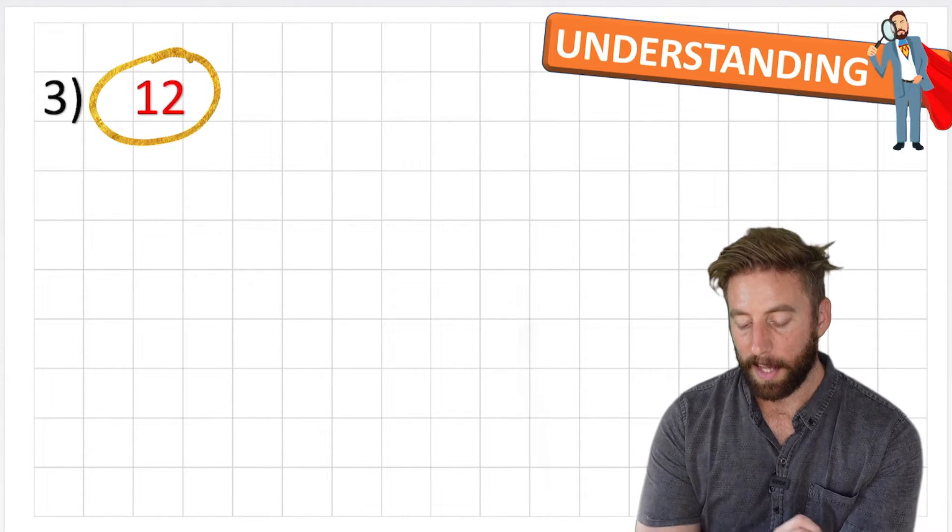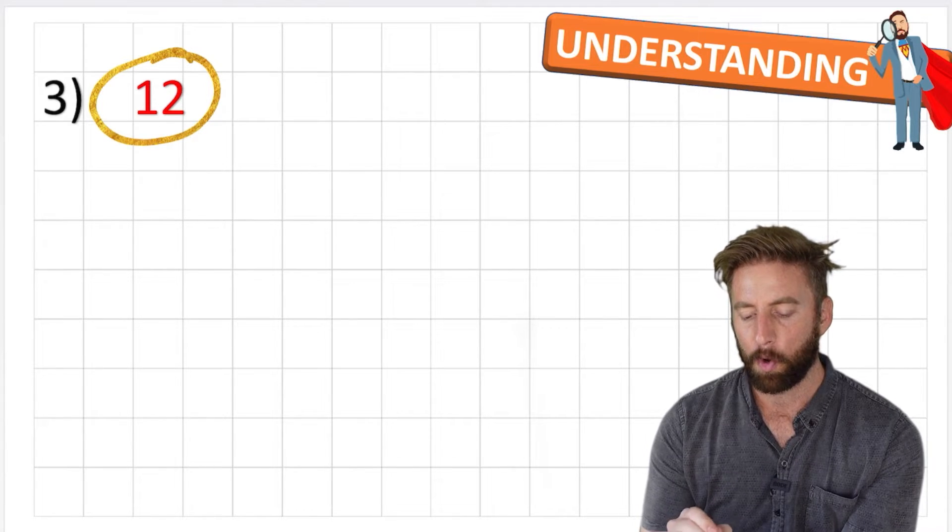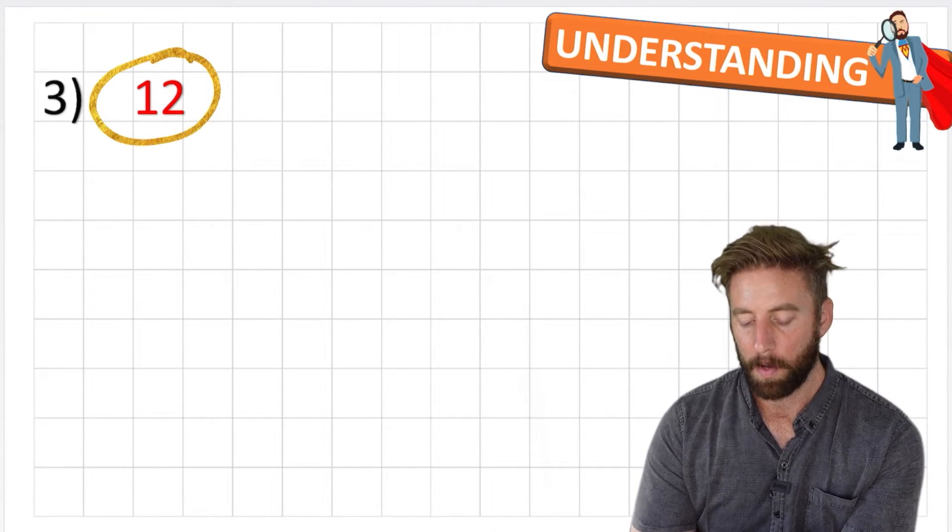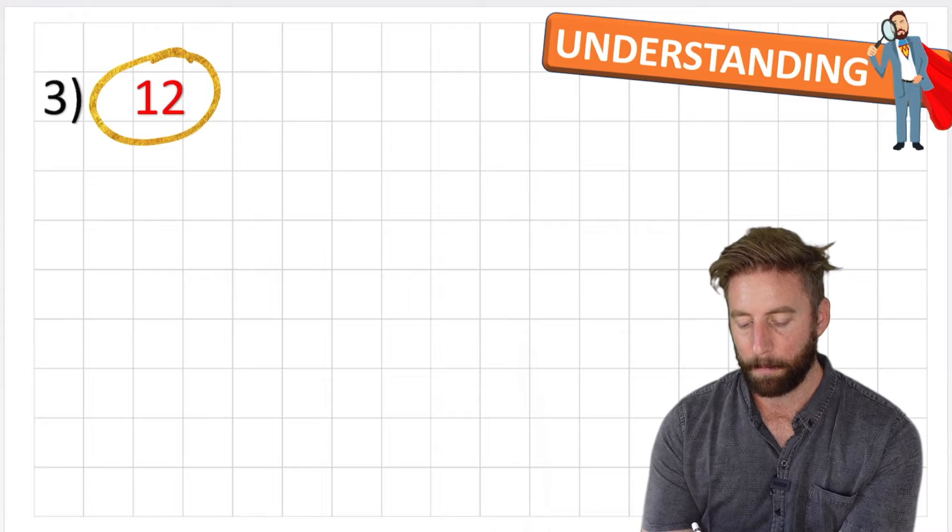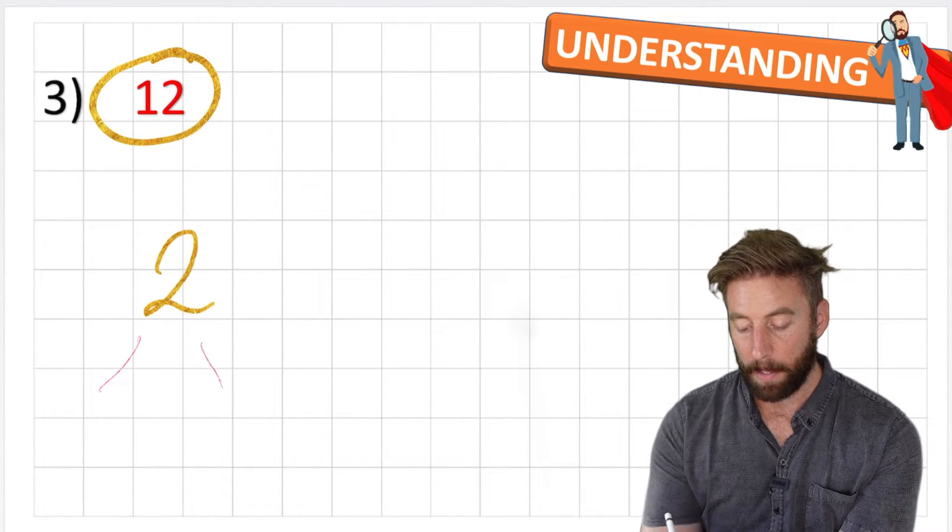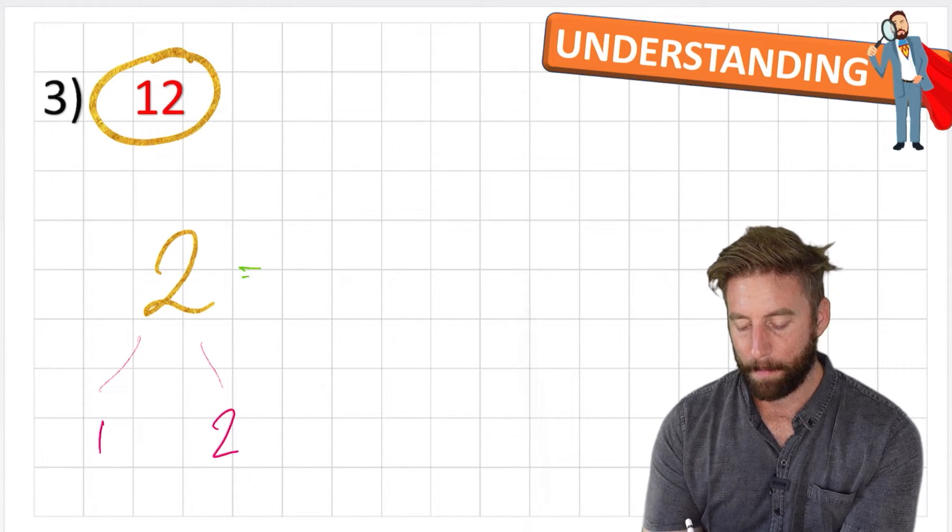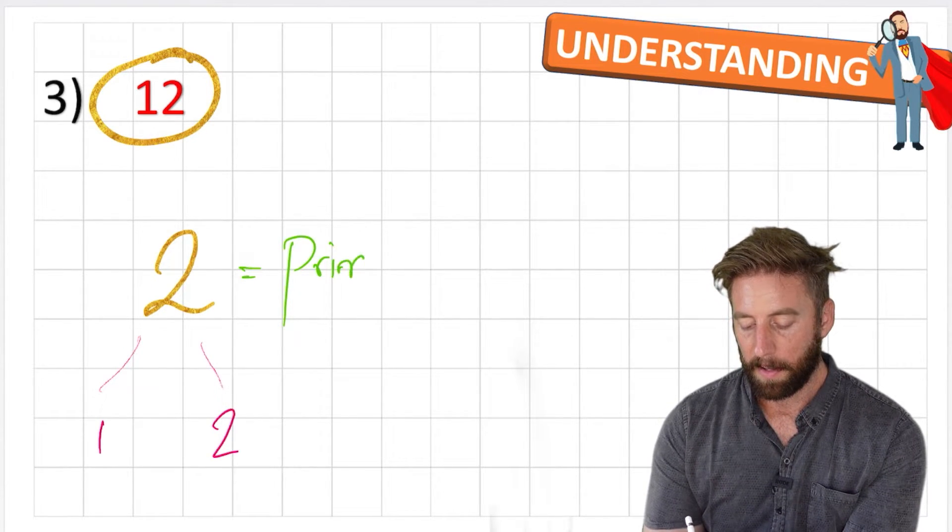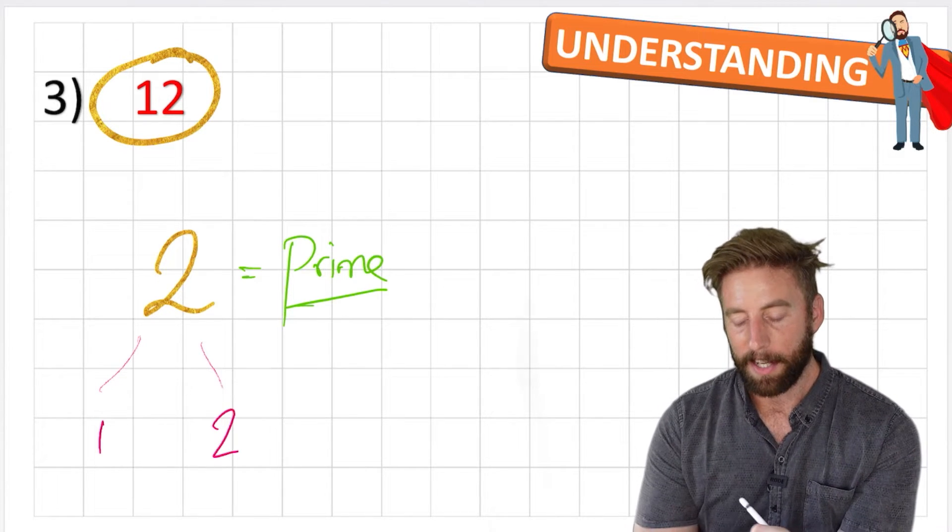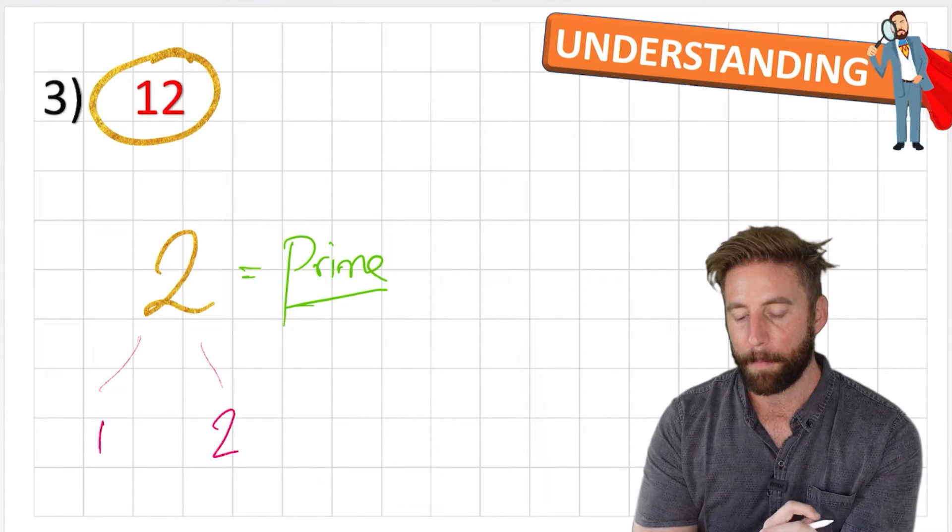Now let's just think about what I just said there. I just said all even numbers can't be prime because we can always multiply them by two. But what about this number, the number two? The number two can only be multiplied by one and two. So therefore, two is a prime number. And here's an interesting fact: two is the only even prime number. So that's something to remember.